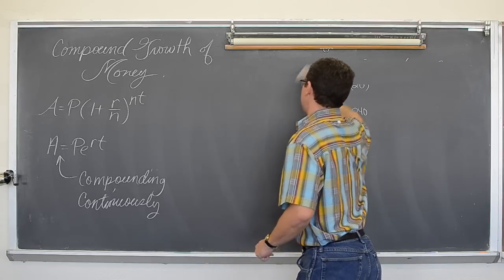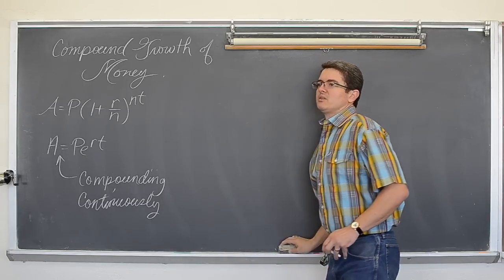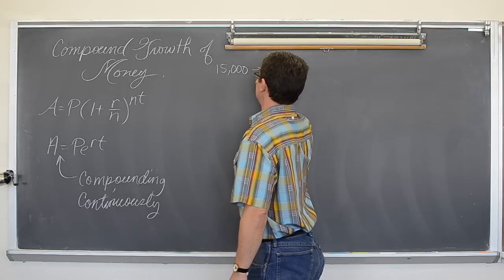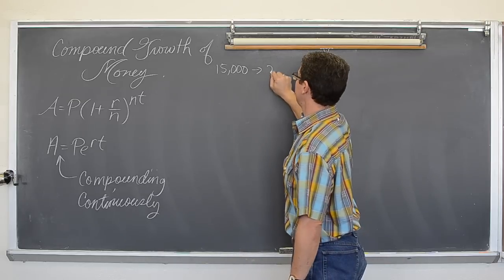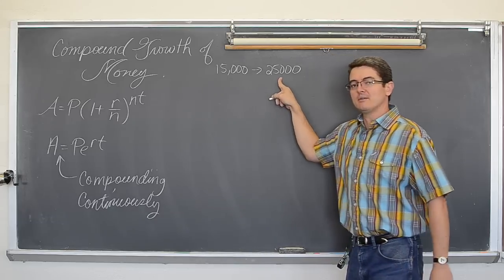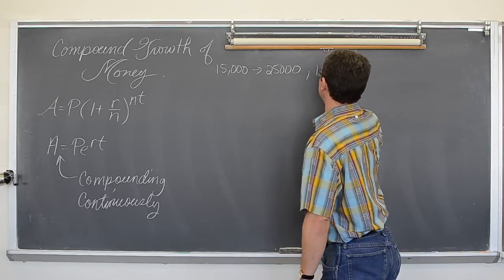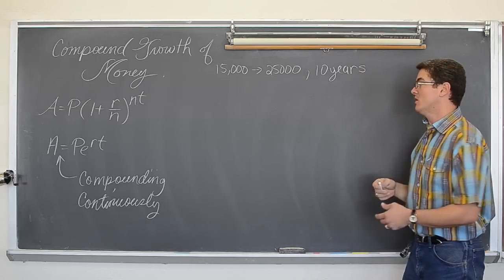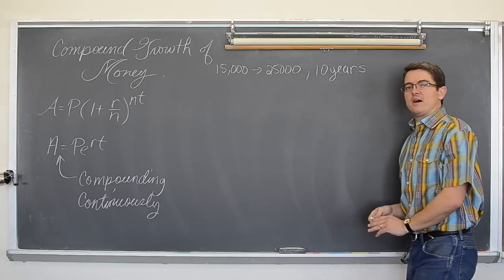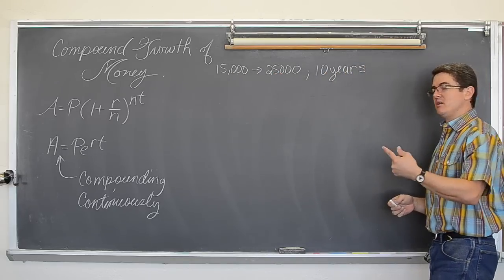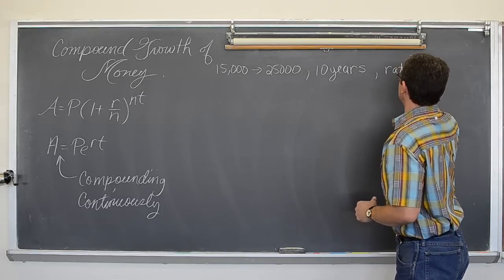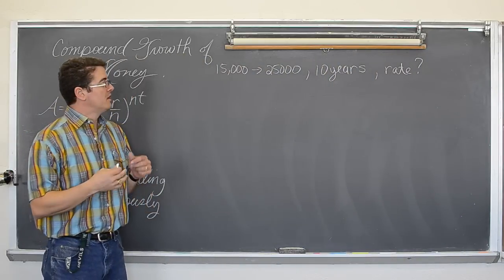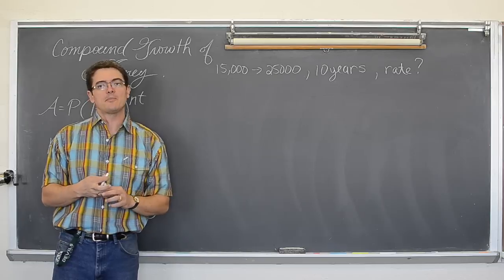Let's take a look at another example. Let's take a look at the fact that we want to find out, we want 15,000 to become 25,000, that is what we would like, and we have 10 years in which we need that to happen. So if we have this and we want it to be 25,000, if we have 10 years to allow that money to grow, what interest rate do we need? What will our goal, what do we need to try to achieve to make this $10,000 increase happen over 10 years?